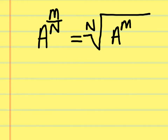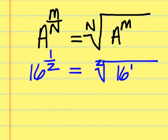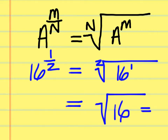For example, 16 to the one-half power: the root is 2 (from the denominator), and 16 is raised to the first power. A second root is the same as a square root, which doesn't need the index written. So this is just the square root of 16, which equals 4. Always simplify these as far as you can.